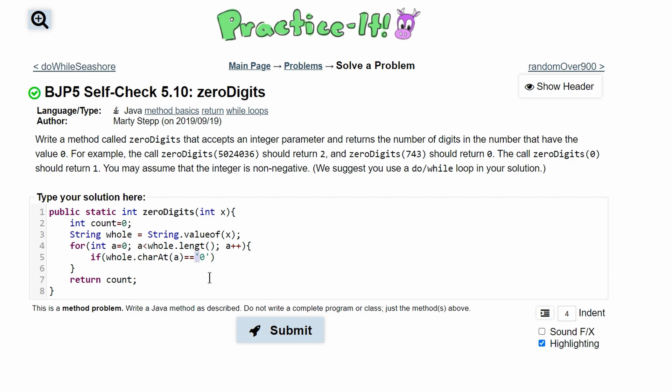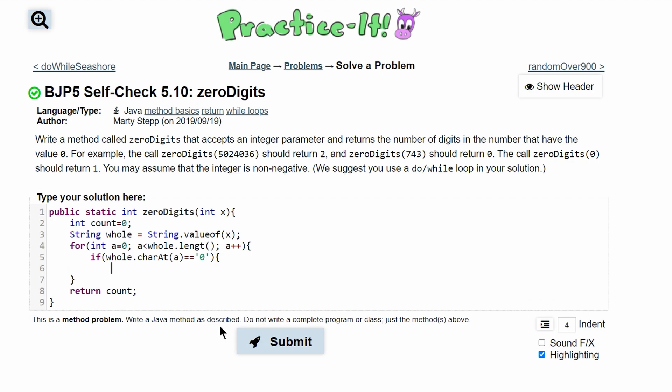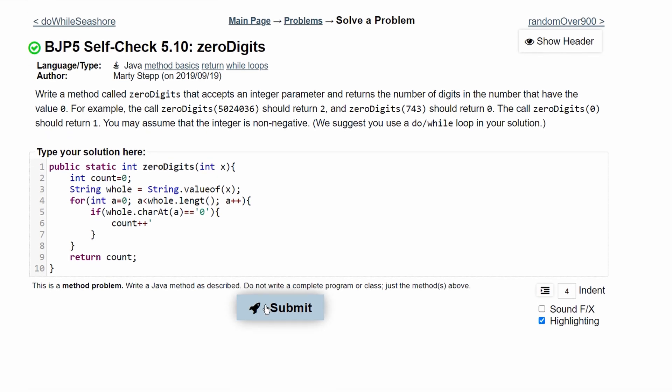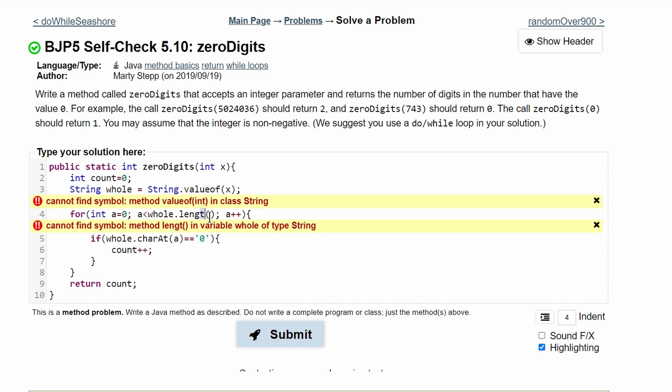So this has to be equals and then the single quotation marks around it - single quotes. Otherwise if we use double quotes it will also give us an error because then we're trying to compare a character to a string. Then in this if statement we will have count plus plus, that way we increment every single time if our character at this certain integer is equal to the character of zero.